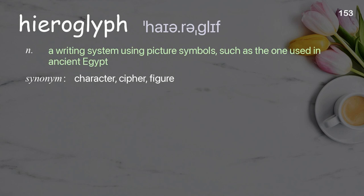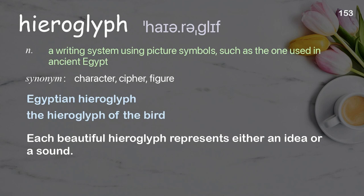Hieroglyph: a writing system using picture symbols, such as the one used in ancient Egypt. Examples: Egyptian hieroglyph, the hieroglyph of the bird. Each beautiful hieroglyph represents either an idea or a sound.